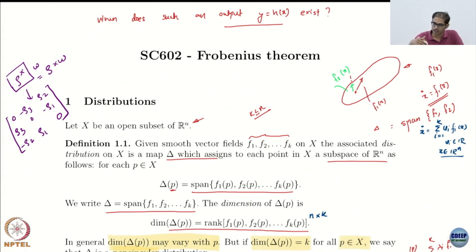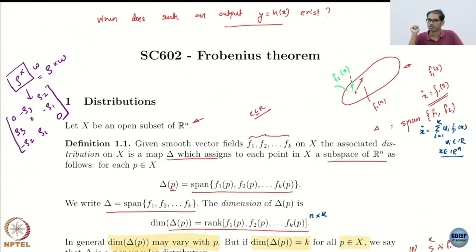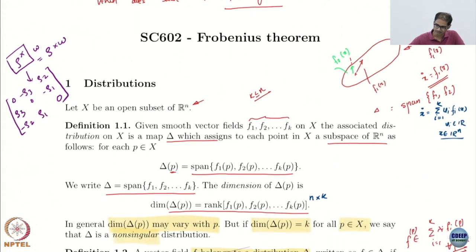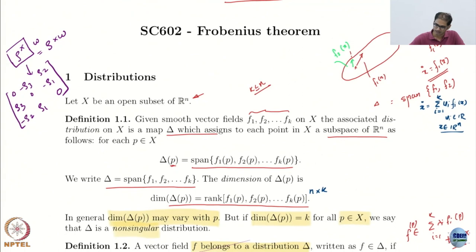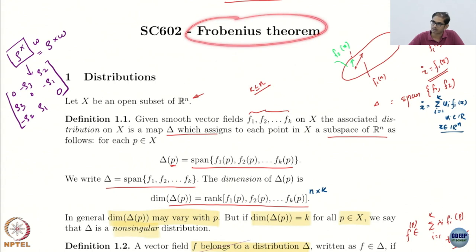When do you have an output such that you can get linearization? In this case you will look at full state linearization, not partial linearization. When can you guarantee existence of such an output Y? Those are the questions being answered here. This is the context of the Frobenius theorem.